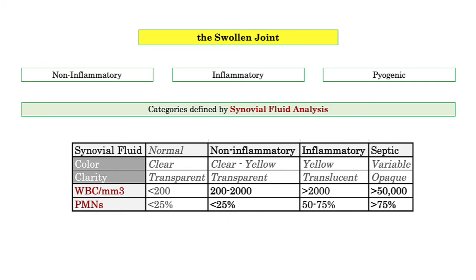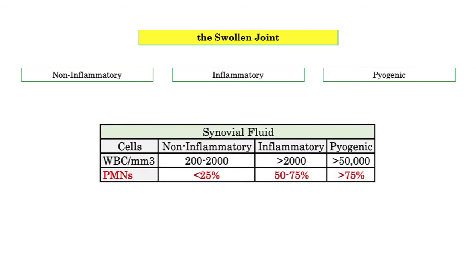We're going to keep the synovial fluid interpretation simple. I've included normal values as a reference. Focus on the cell count and, more importantly, the percentage of PMNs — these are the major values to be familiar with on the boards. Non-inflammatory conditions have less than 2,000 WBCs, with only a low percentage of PMNs. Inflammatory disorders have a wide range of WBCs from the thousands into the tens of thousands — I simply list greater than 2,000 — but pay attention to the percentage of PMNs: less than 75%. That's the magic number.